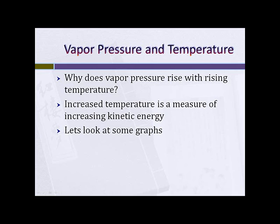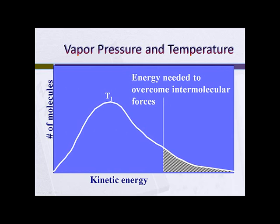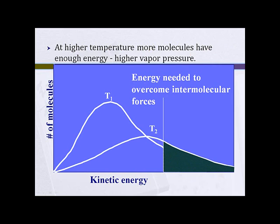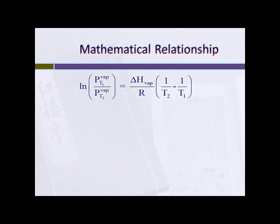Why does vapor pressure rise with rising temperature? As the temperature goes up, kinetic energy goes up. Looking at a Boltzmann distribution — a plot of number of molecules as a function of kinetic energy — at temperature T1, only molecules above a certain threshold energy can vaporize when they reach the liquid surface. When we raise the temperature to T2, the curve shifts further right and becomes flatter, but the number of molecules that have enough energy to overcome the intermolecular forces of attraction is increased.